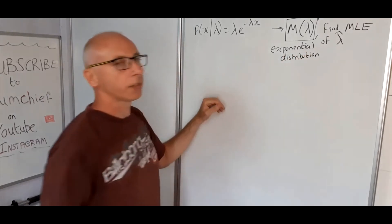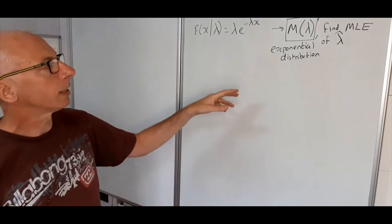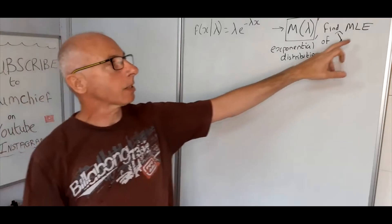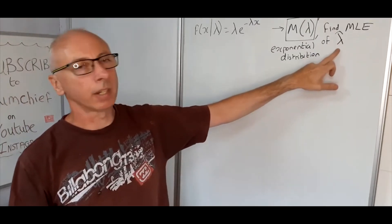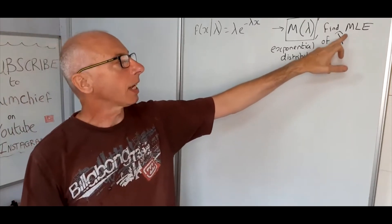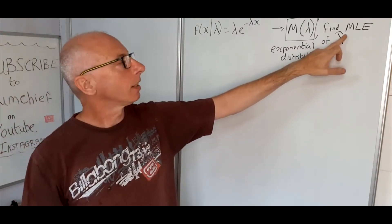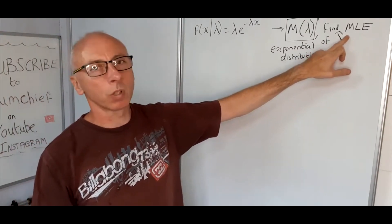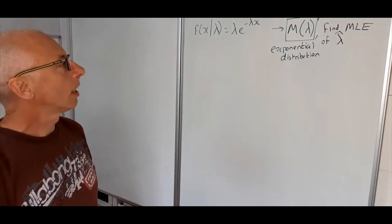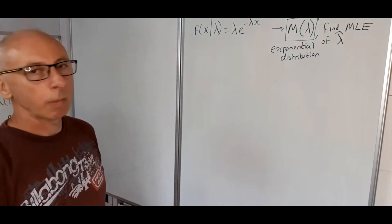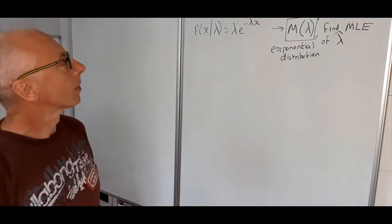What we need to find from that is the maximum likelihood estimate of lambda — i.e., lambda hat — which is what we will call our MLE. So how are we going to go about finding that?